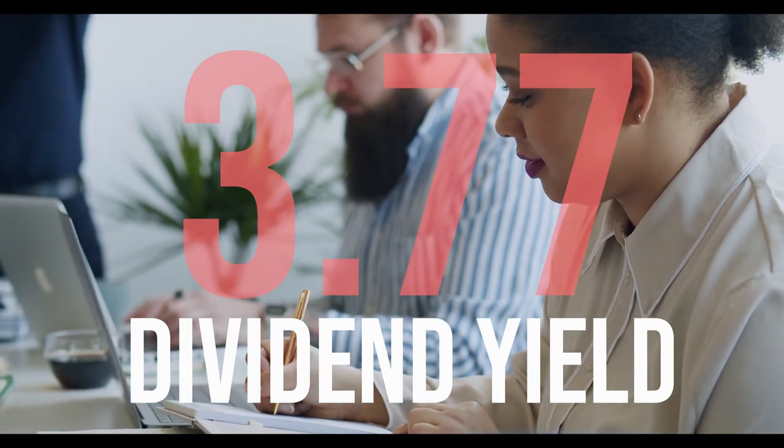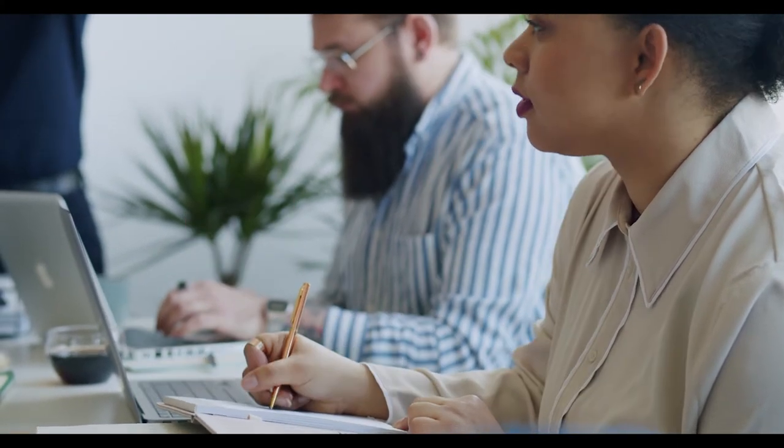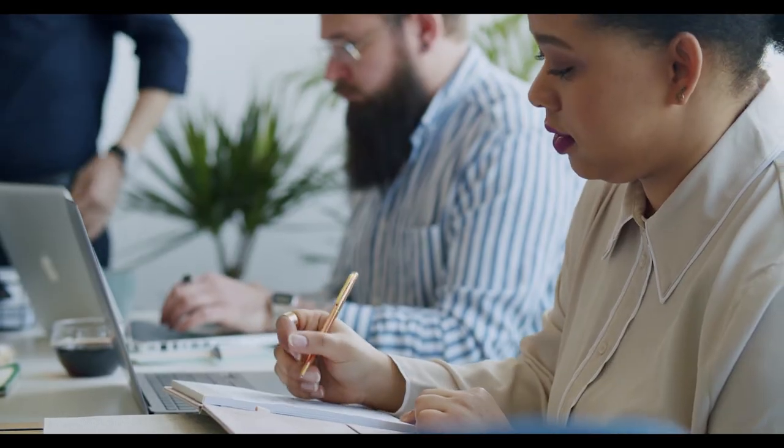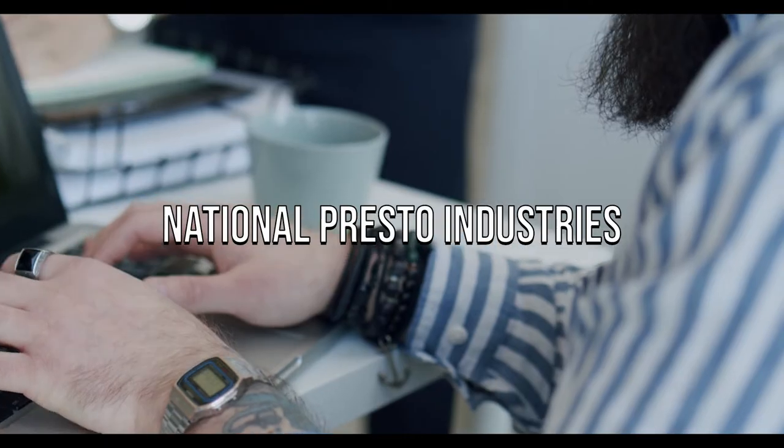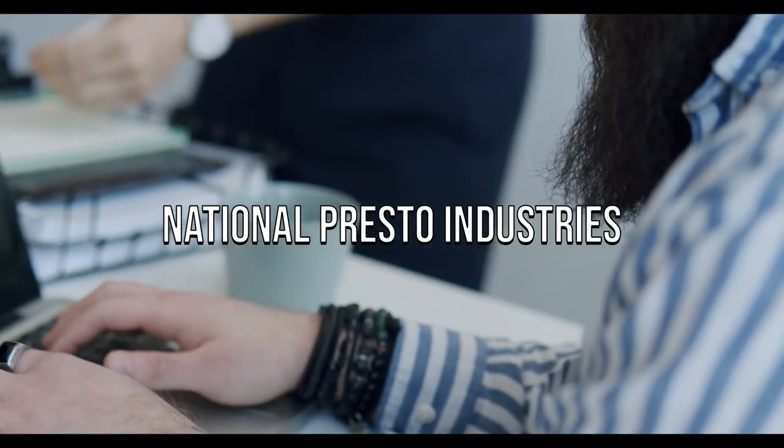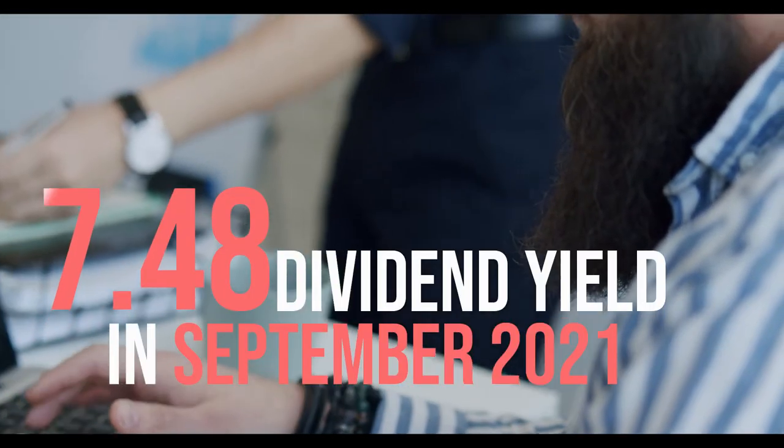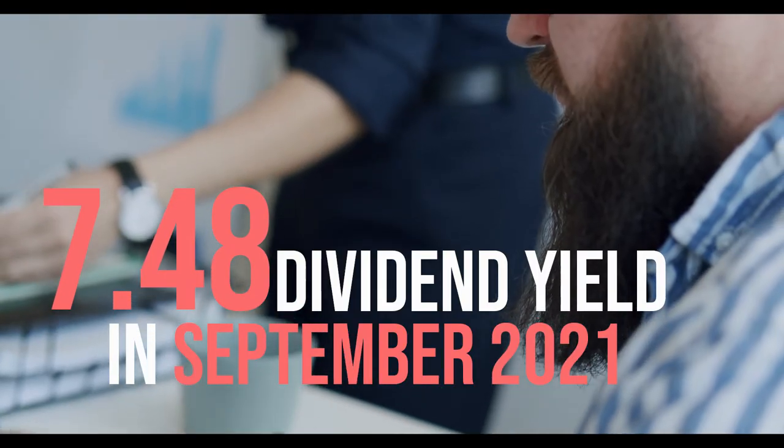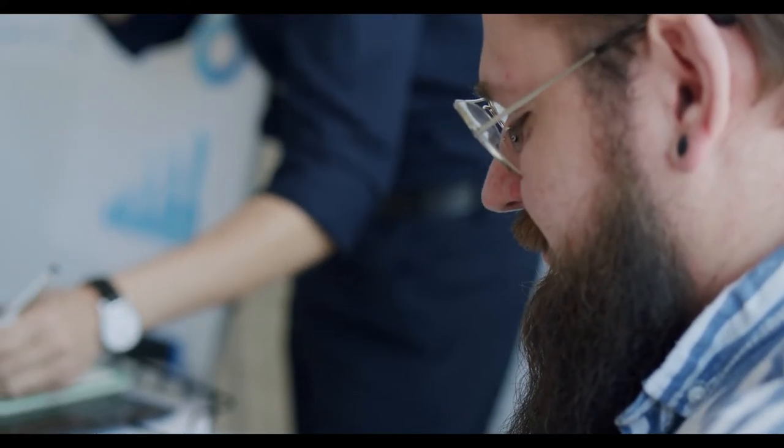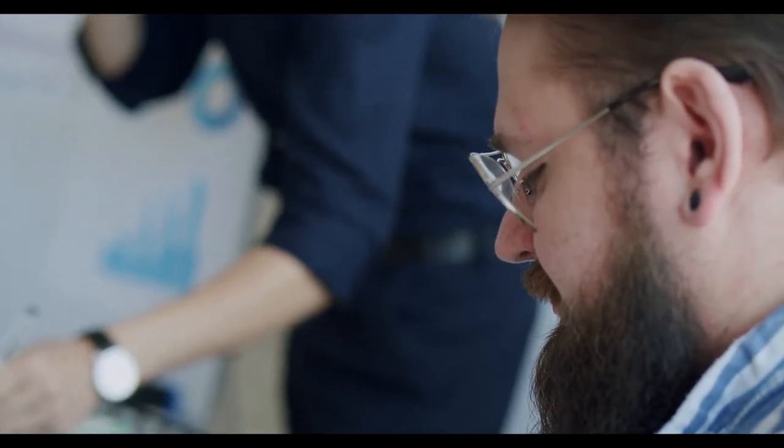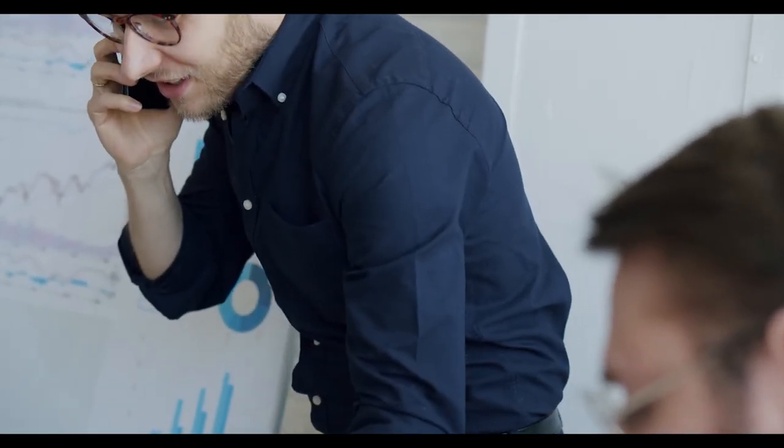You might be thinking that a 3.77% dividend yield isn't all that impressive—I have stocks in my portfolio that pay as high as an 8% dividend yield, you might say. Take, for example, National Presto Industries, which has a 7.48% dividend yield in September 2021. While that dividend is certainly appealing, the stock growth has been dismal, as shown by the five-year chart here. This is a classic case of a value trap, also known as a dividend trap, in which the dividend yield is extremely high but the stock or ETF loses value over time.